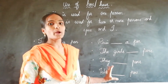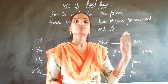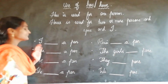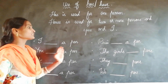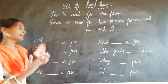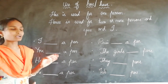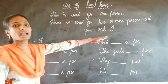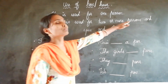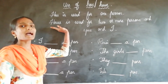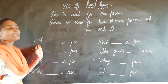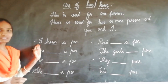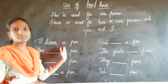Here I have taken a few examples of where we should use has and have. See here: 'I dash a pen.' We should write has or have in the blank. 'I' is used with have, along with 'you' and two or more persons. So, I have a pen.